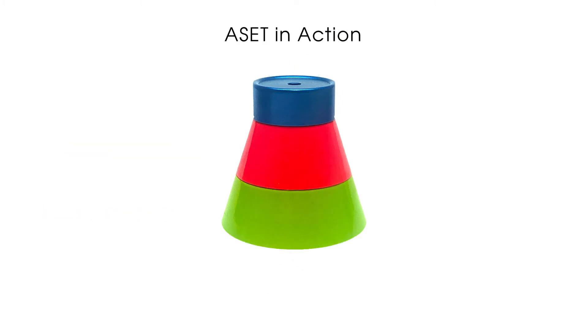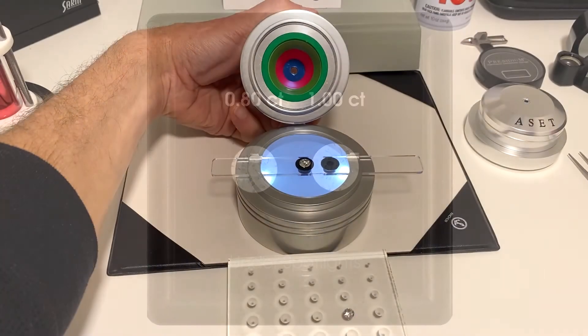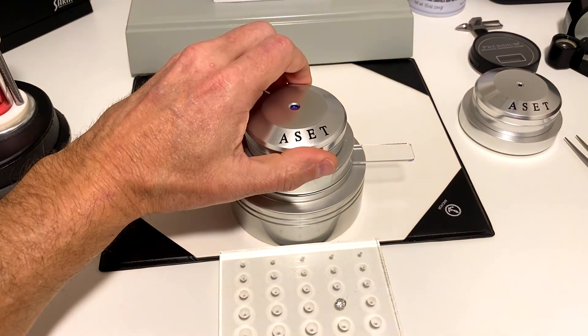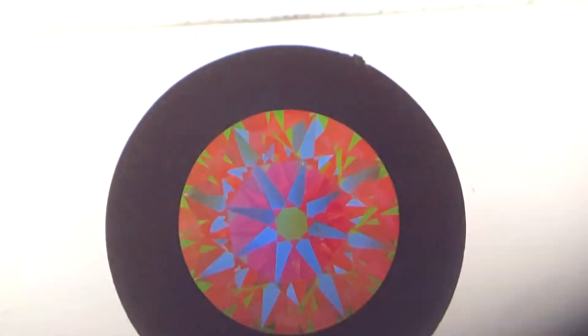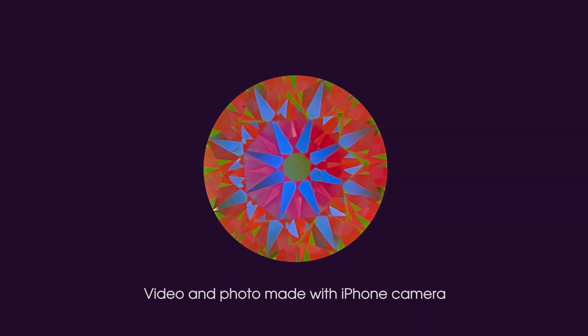Let's see the Asset in action. Under jewelry store spotlights, both these stones seem big and bright. There's an 80 pointer on the left and a one carat stone on the right. If both cost the same amount, you might be inclined to buy the one carat stone. Before you do, let's analyze them in Asset. Red and green are brightness. The stone on the left shows brightness from edge to edge and across the center. Red is abundant with small, symmetrical green areas, which are expected. The brightness is unbroken by dark leakage or windowing. The blue contrast pattern is balanced and symmetrical. This is a well-cut stone that will be at its brightest in all lighting conditions.